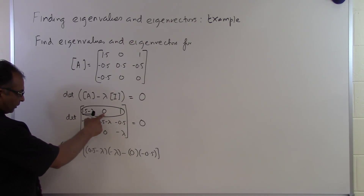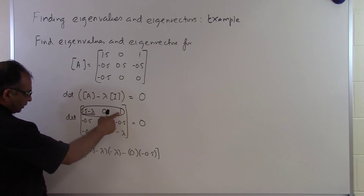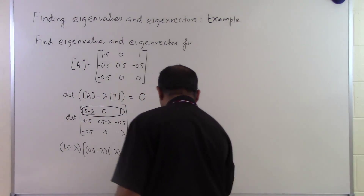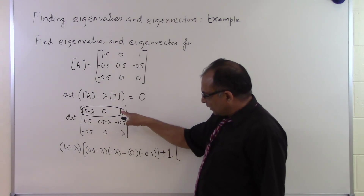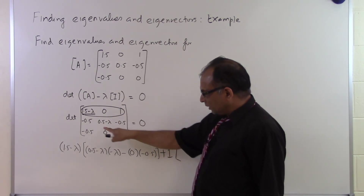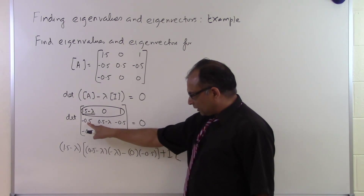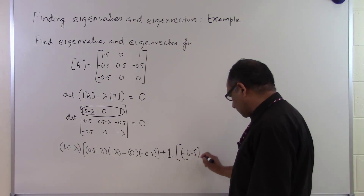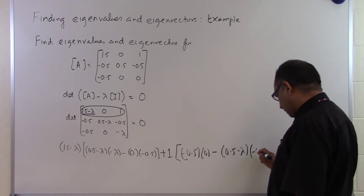The middle column entry is 0, so that term vanishes. The next term comes from first row, third column — index 1 plus 3 equals 4, which is even, so it's positive — multiplied by 1. The determinant of the remaining 2 by 2 matrix is: minus 0.5 times 0, minus 0.5 minus lambda times minus 0.5. And the whole expression is set equal to 0.